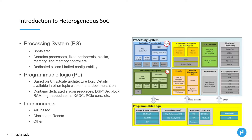We have the processing system and the programmable logic, and we want to be able to communicate between the two. To do that we have the AXI bus, which connects between the PS and the PL in both directions, providing interfaces that are both master and slave, allowing either the PL or the PS to be the master depending on the data transfer. AXI is a memory-mapped protocol, so to the processor it's just another memory write or DMA configuration to move data between PS and PL.